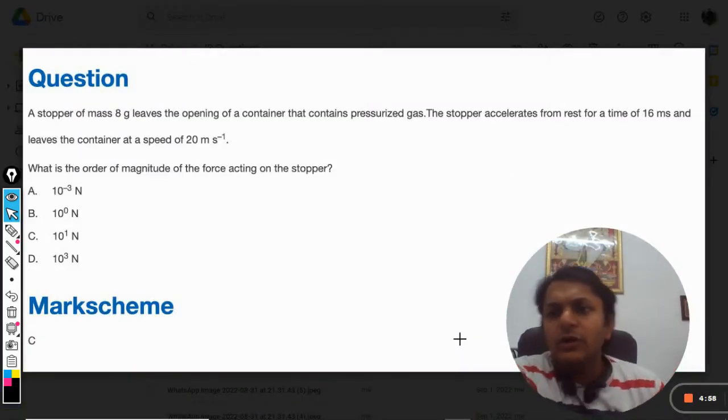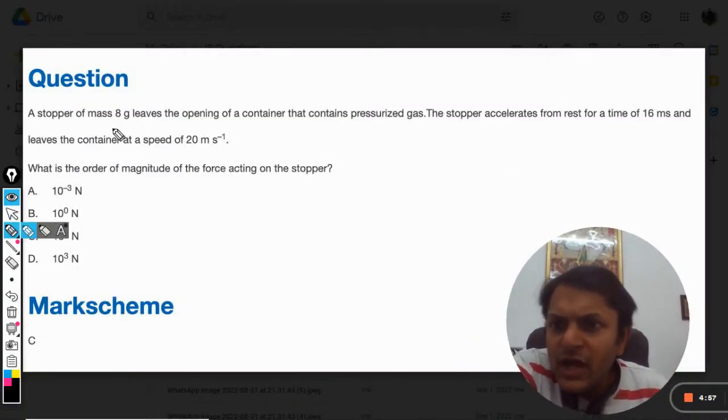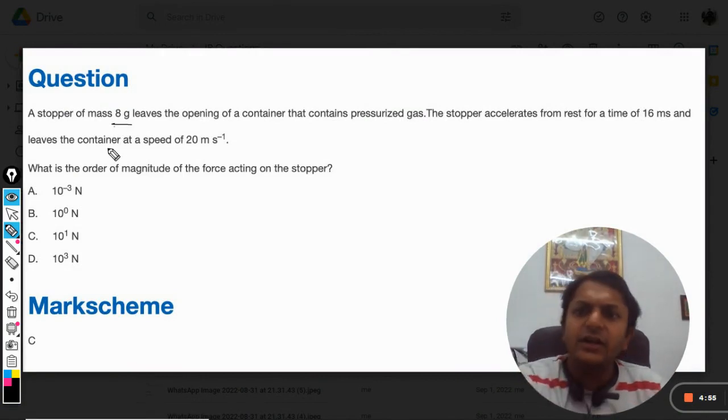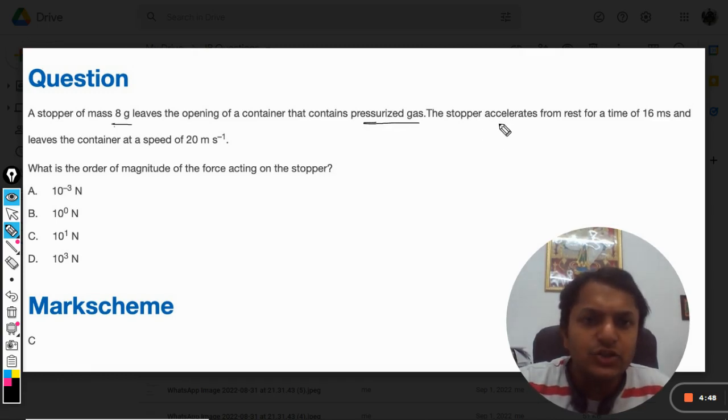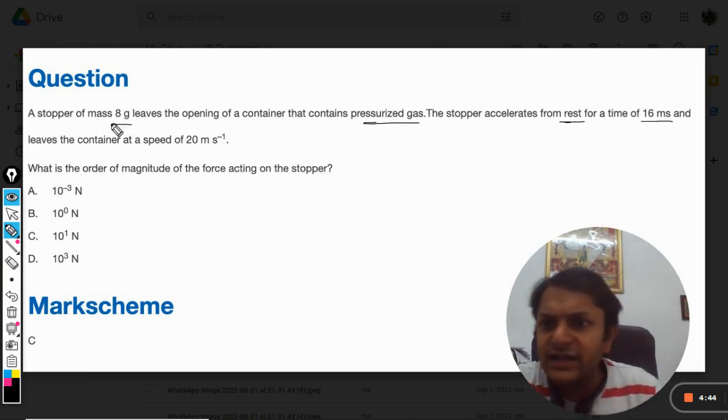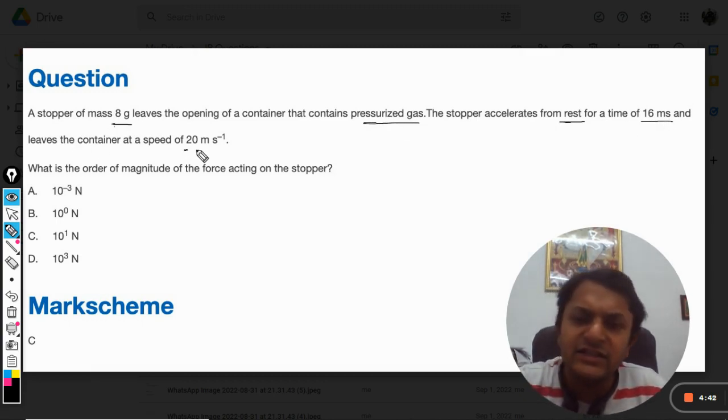Okay, so in this question a stopper of mass 8 grams leaves the opening of a container that contains pressurized gas. The stopper accelerates from rest for a time of 16 milliseconds and leaves the container at a speed of 20 meters per second.